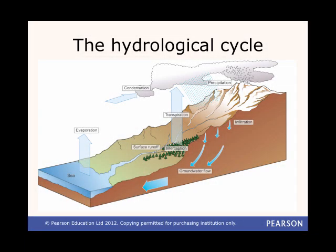New water doesn't get created. The amount of water in the world has been the same for millions of years. But water does change its form and where it's stored. Some water is stored as ice in the polar regions and glaciers or in underground aquifers. But the vast amount of the world's water is stored in the sea — 95%.